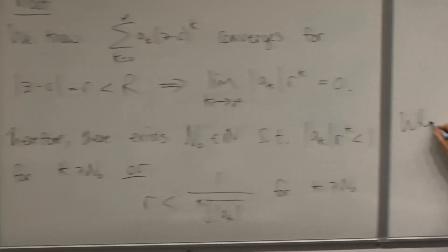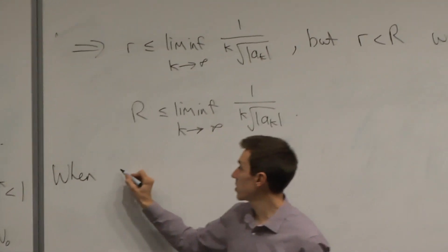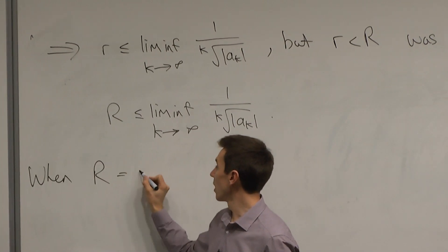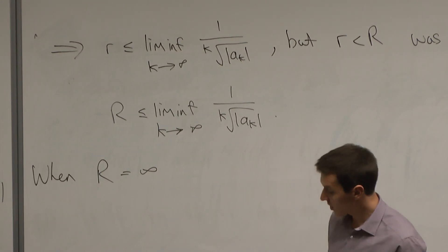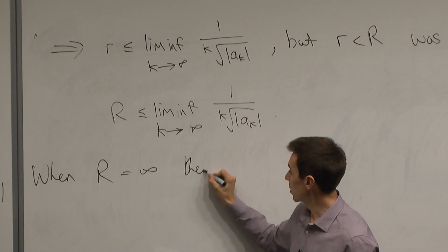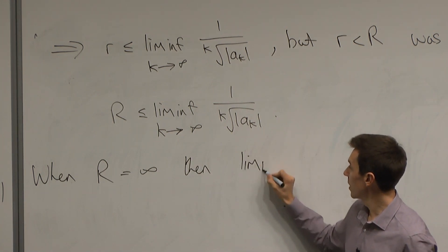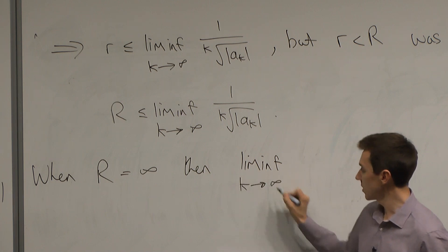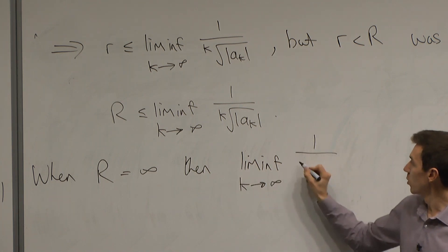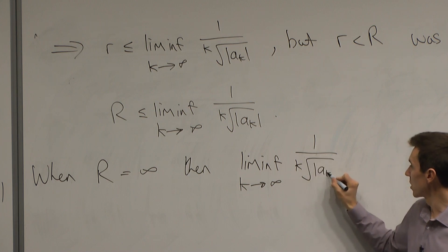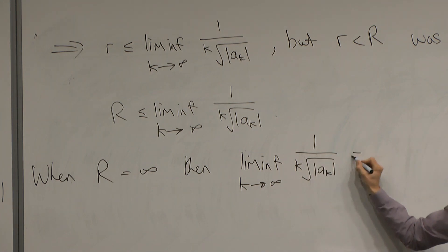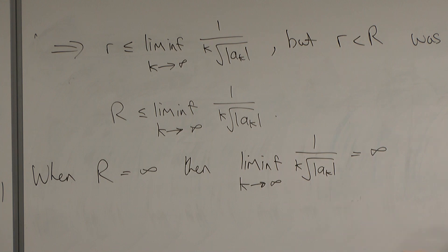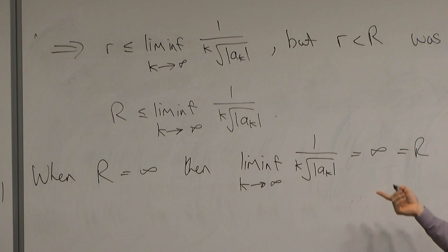The next step is when R equals infinity. This is quite straightforward because then lim inf as k tends to infinity of 1 over the k-th root of the modulus of a_k will also be infinity, which equals R. So it works for the infinity case in a straightforward way.